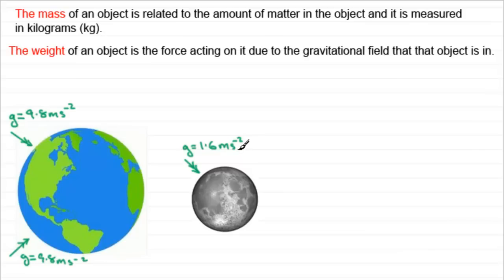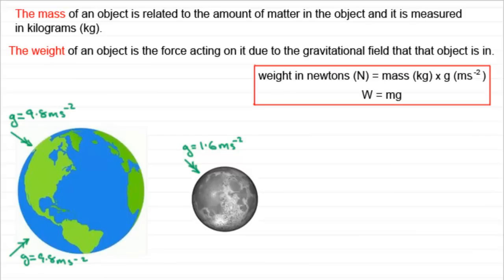When it comes to weight, weight is measured in newtons, assuming that your mass is in kilograms and your acceleration due to gravity is measured in meters per second per second. We often say that weight is equal to mg.